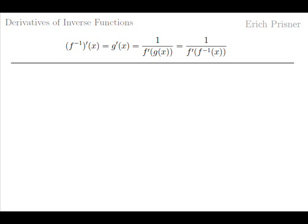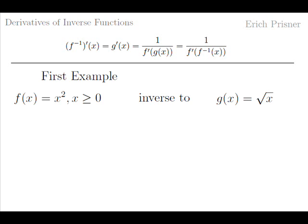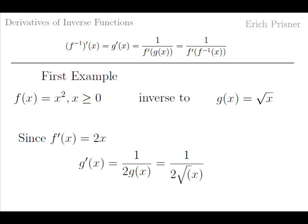Let's apply this formula to the three examples mentioned. First, take g of x equals square root of x. It is the inverse function of f of x equals x squared, when the domain is restricted to non-negative x, since otherwise f would not be a one-to-one function. We know that f prime of x equals 2x. Therefore, the derivative of the square root function is g prime of x equals 1 over 2 times g of x, which is 1 over 2 times square root of x.